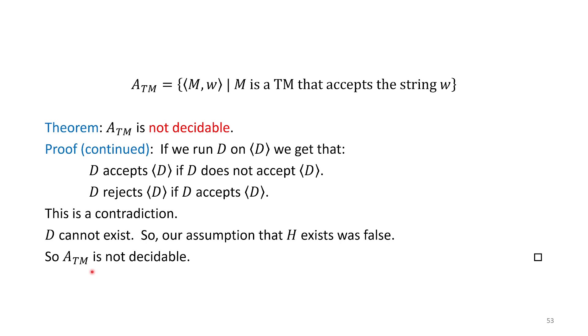This machine D, we call it D for diagonalization. We've designed it in a very weird way to ensure it is not equal to any Turing machine possible. There's no such Turing machine that could be this D. Therefore, our set ATM that we assumed was decidable cannot be decided.